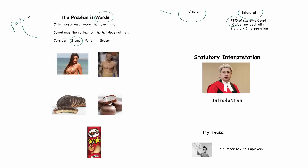Consider the word stamp. That could mean a postage stamp, or it could mean to put your foot on something. Patient means to wait for something to happen, or it could mean somebody that's a resident of a hospital. Season could mean spring, autumn, winter, summer, or it could mean to add salt and pepper. You may think it's obvious, but frequently the context doesn't help.